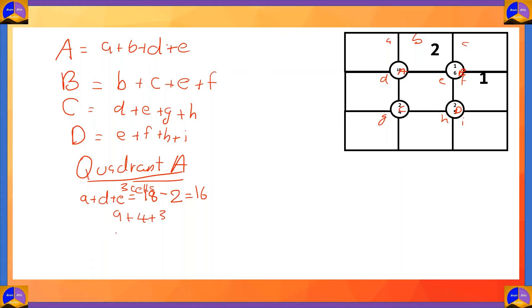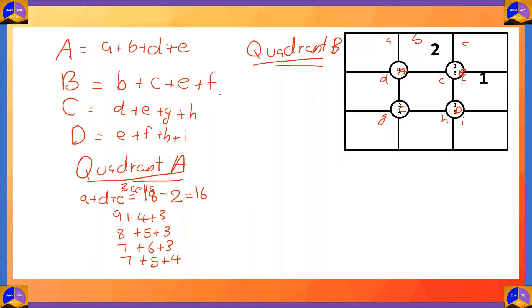So the three cells a, d and e must add up to 16. The options are: 9+4+3, 8+5+3, 7+6+3, and 7+5+4. Now quadrant B is made up of cells b plus c plus e plus f. We know that b is 2 and f is 1, so c plus e will equal 16 minus 3, which is 13. The options for two cells adding to 13 are: 9+4, 8+5, and 7+6.